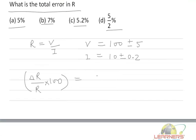This will be equal to delta V upon V into 100, plus delta I upon I into 100.